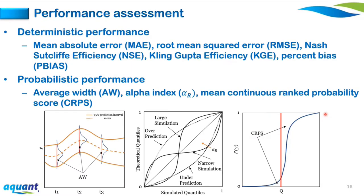For performance assessment, deterministic performance uses the mean of ensemble and stochastic simulations. For probabilistic performance: Average Width measures the 95% prediction interval averaged across the time series (sharpness); the Alpha index measures the area between the coverage probability plot and the bisector line (reliability); and the Mean Continuous Ranked Probability Score (CRPS) measures the area between the simulated and observed streamflow CDFs, capturing both sharpness and reliability in one metric.